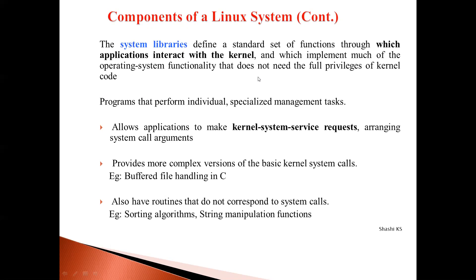One important task done by system libraries is arranging the system call arguments in the special form necessary to make the system call. Another important task is that they sometimes provide more complex versions of the basic system calls. For example, one such case is buffered file handling in C. A buffer is a special temporary region of physical memory, and when file operations are done, data is stored temporarily in the buffer. When the file is closed or the buffer becomes full, the data is copied to the file — this is called buffered file handling.